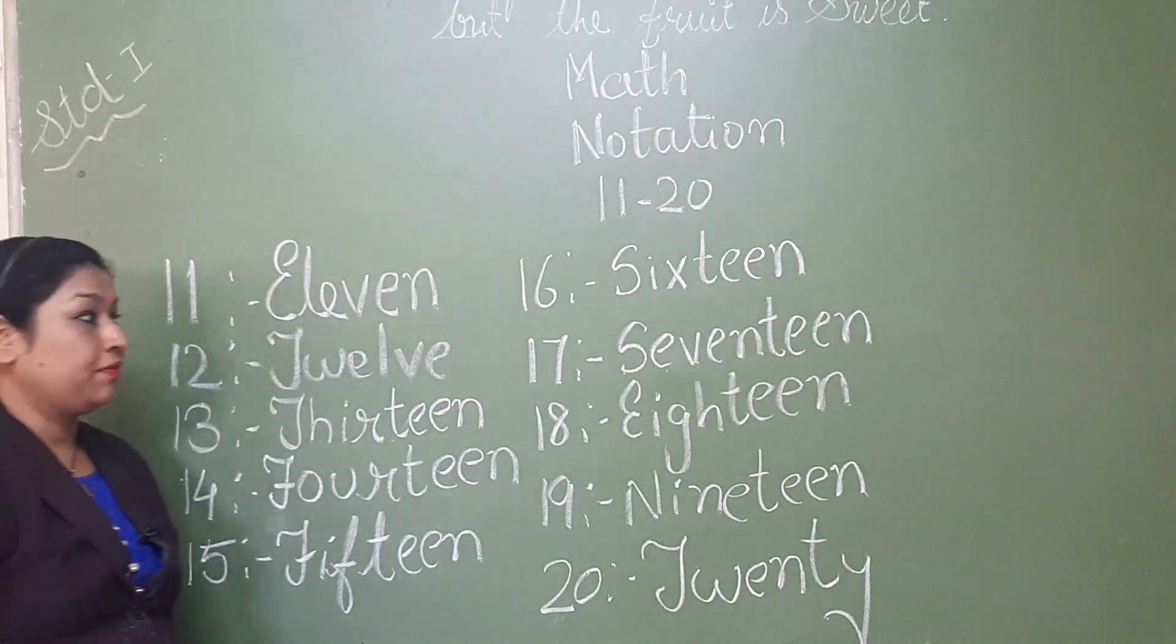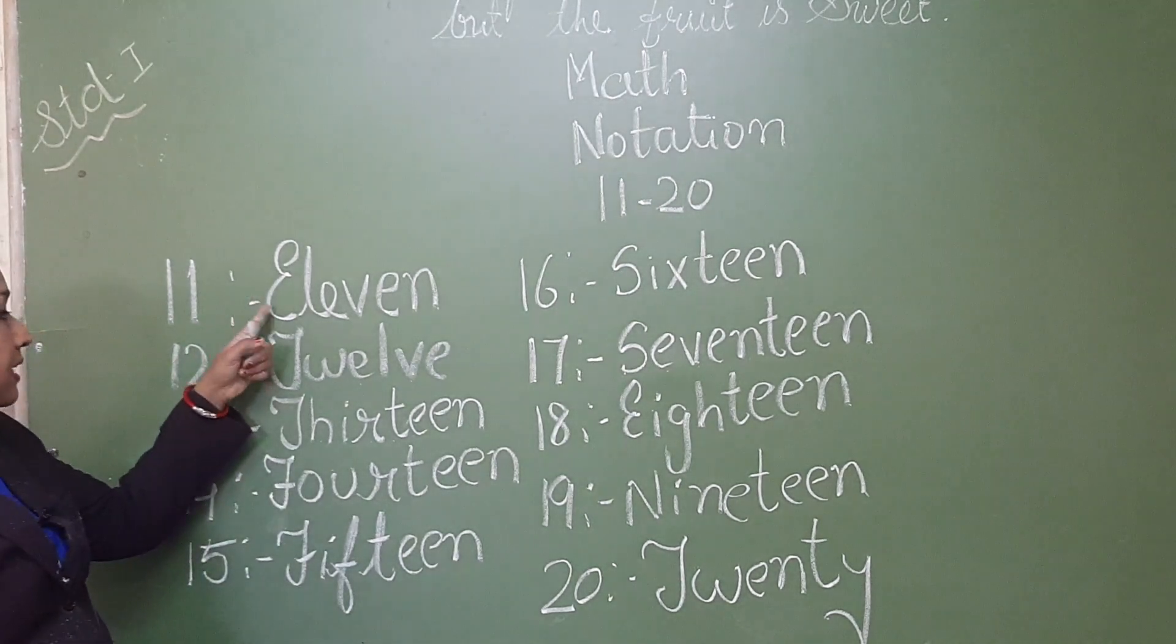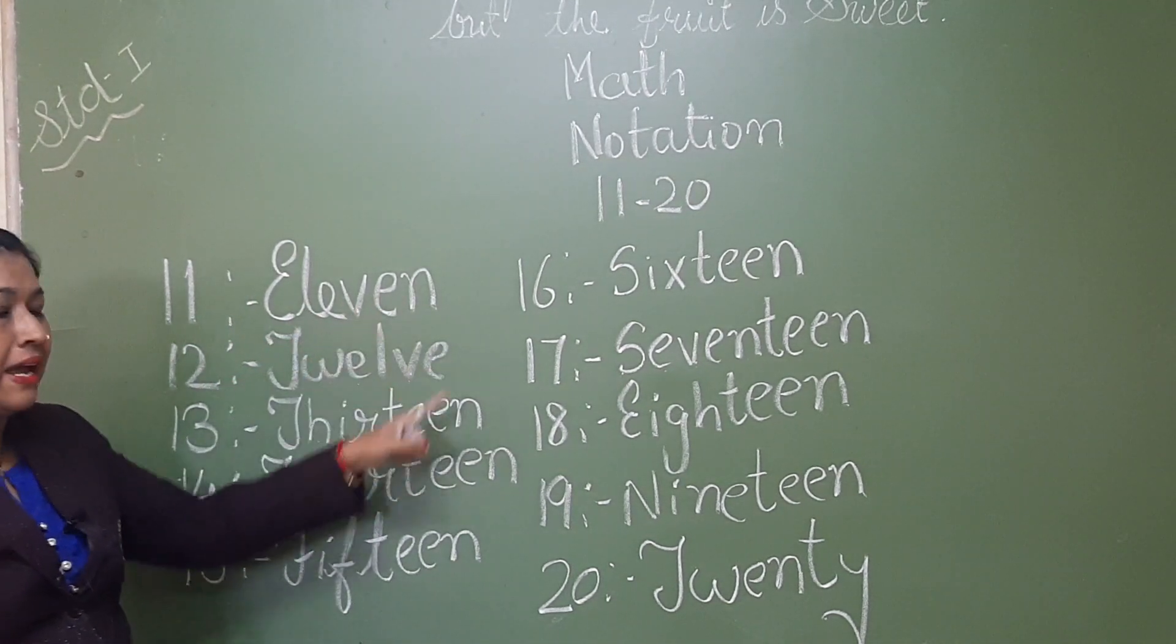Okay, now quick, we will repeat. 11 and the spelling is E, L, E, V, E, N, 11.